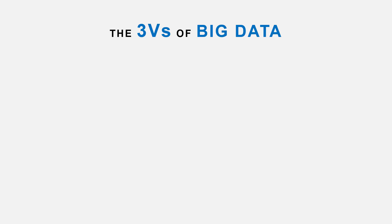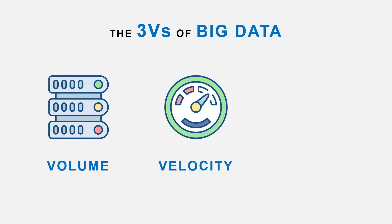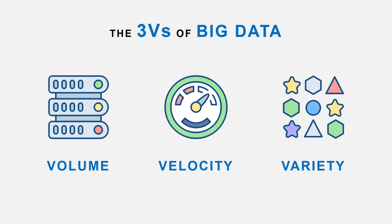When we describe big data, we usually use what are called the three Vs. Big data has volume — there's lots of it. It has velocity — the data comes really fast. And it has variety — we have a mix of data types, including structured and unstructured data and everything in between. So: volume, velocity, and variety.